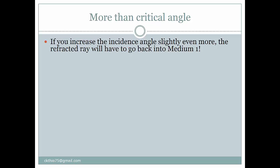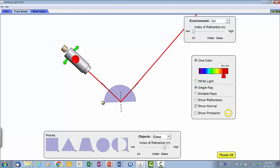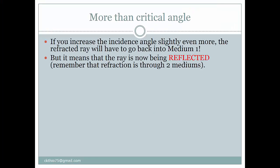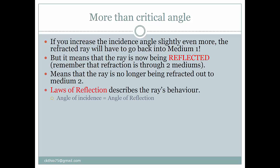If you increase the angle of incidence slightly more, the refracted ray would have to go back into medium one. The ray is being reflected back and is no longer refracted out of medium two. When reflection happens, the law of reflection describes the ray behavior, where the angle of incidence is equal to the angle of reflection.